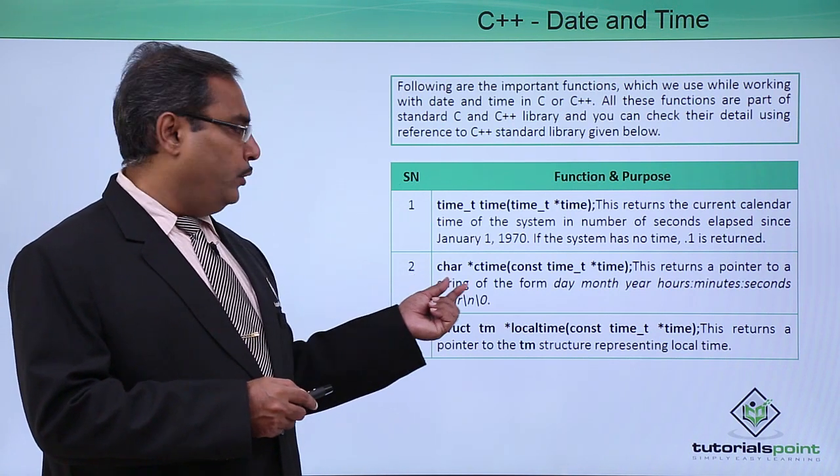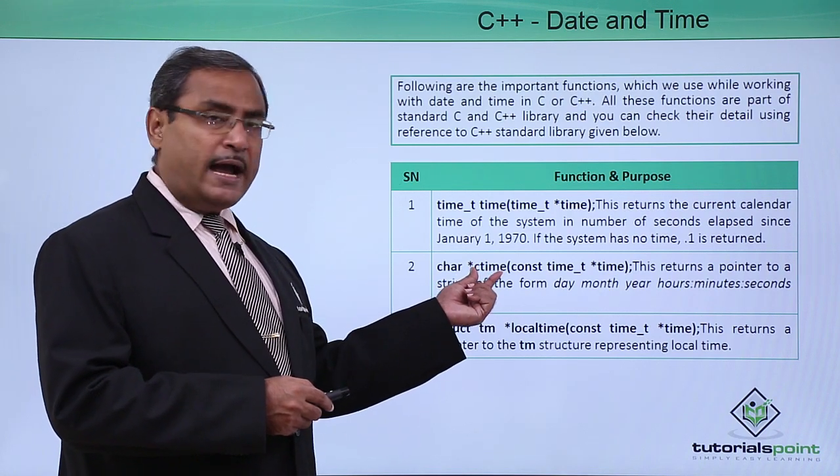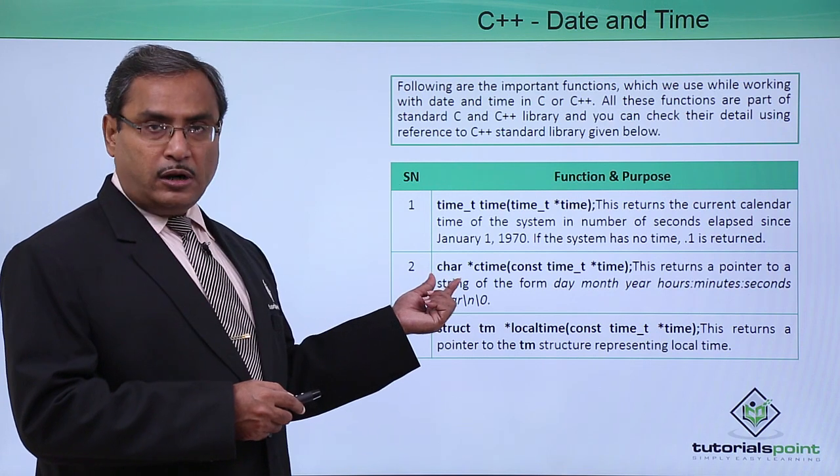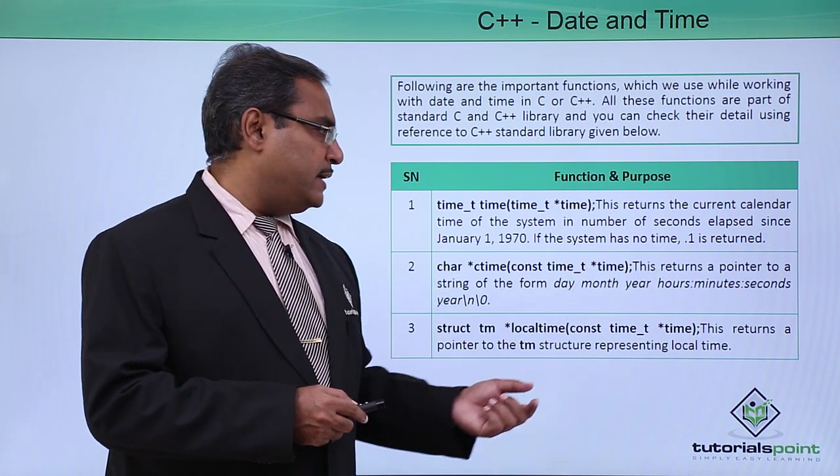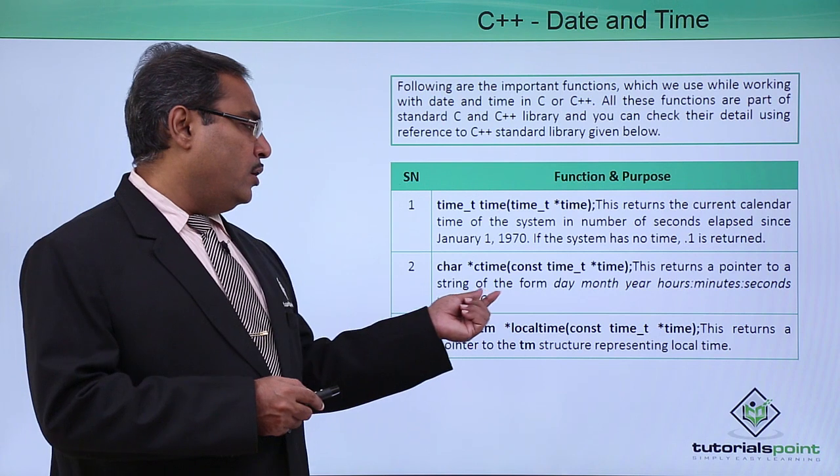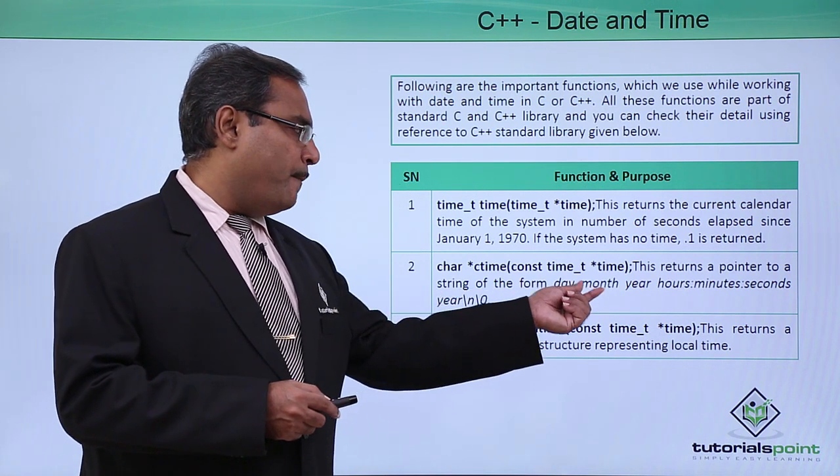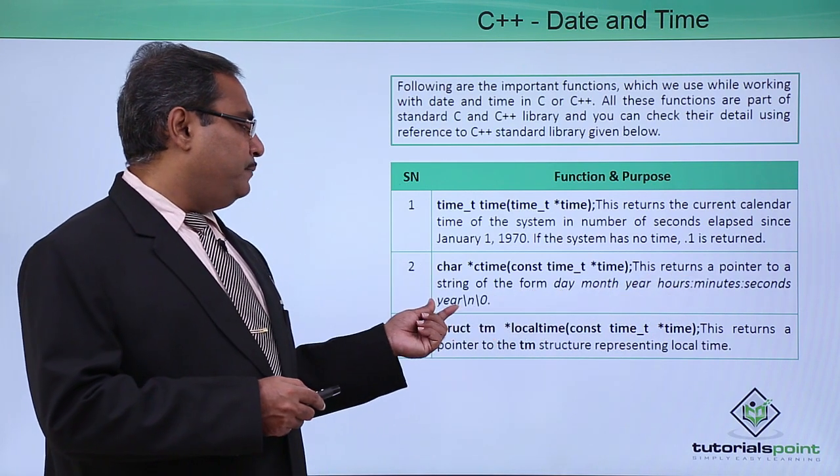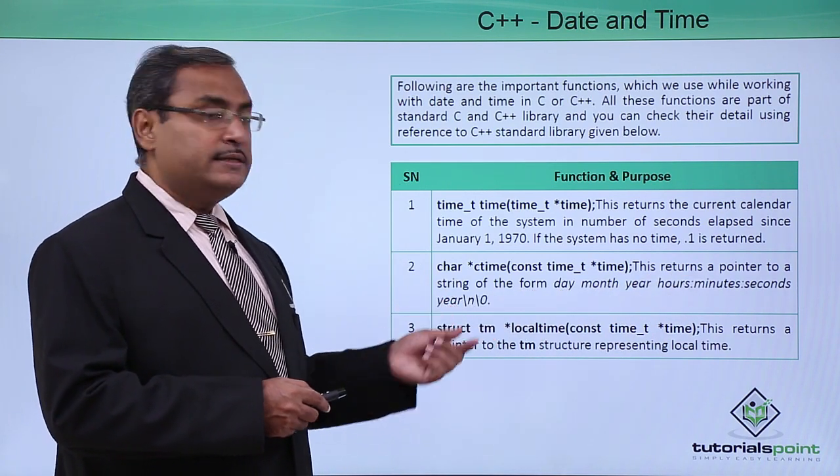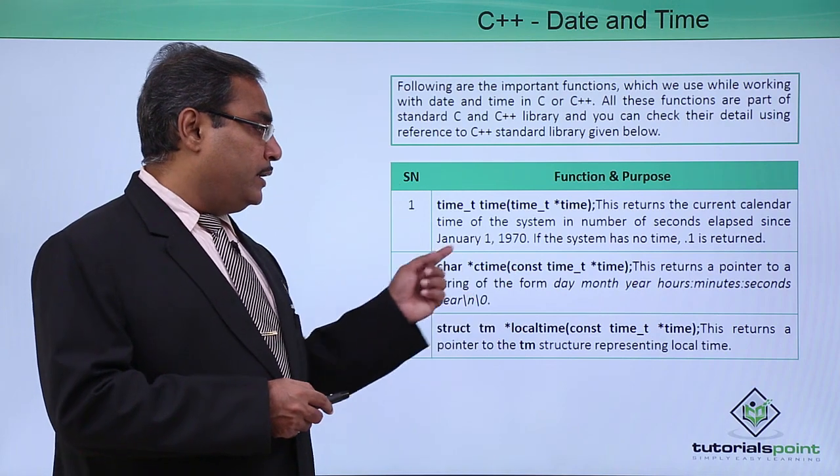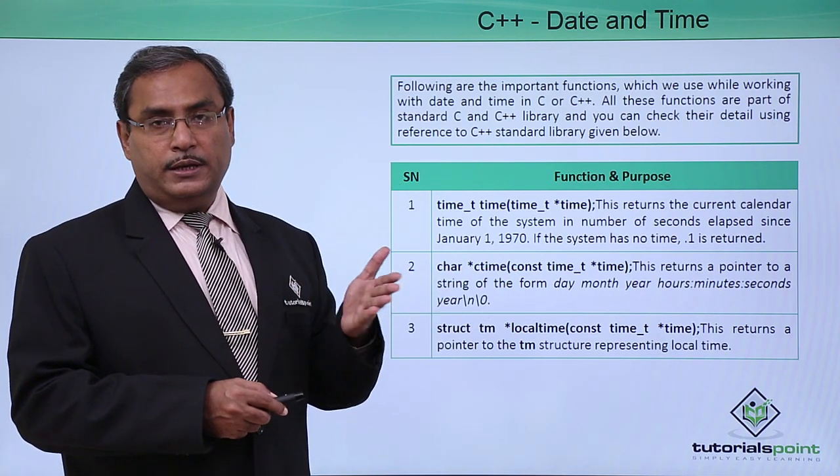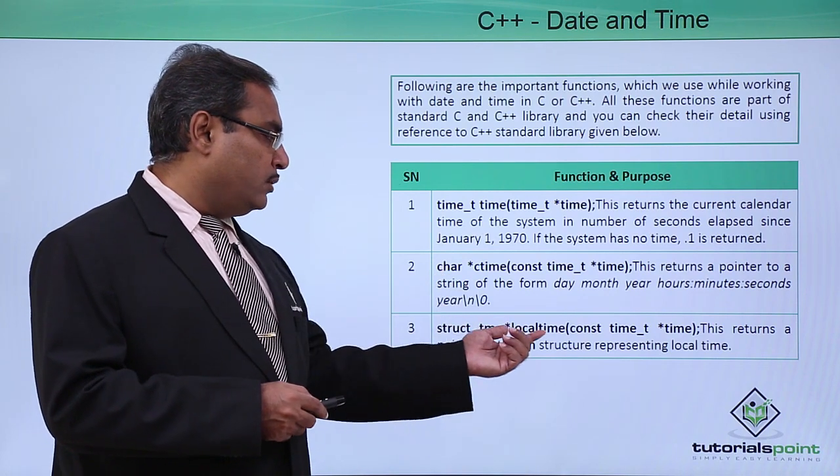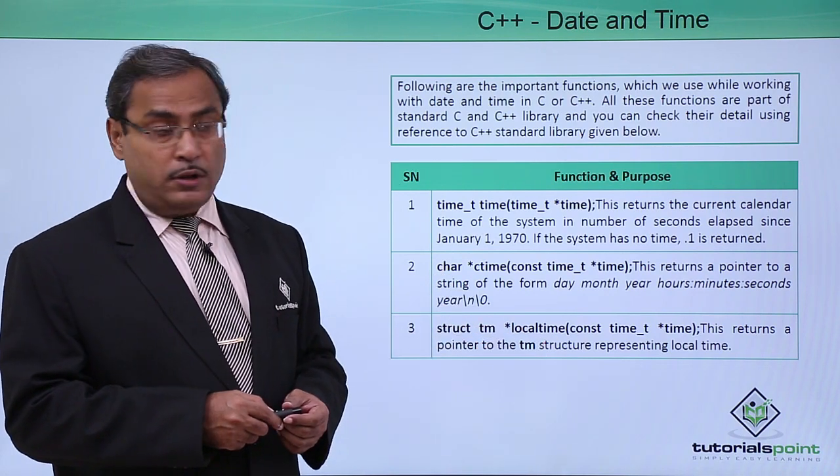In case of second function, we are going to discuss as ctime and here this is the input argument and this is the output argument that is the character pointer. This returns a pointer to a string of the form day, month, year, hour colon minute colon seconds that means year slash n slash 0. In this way that ctime will be returned and that is my character pointer type. In this way we are having another one that is the local time.